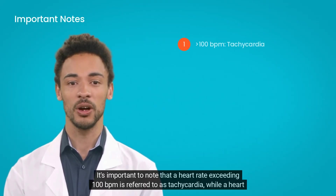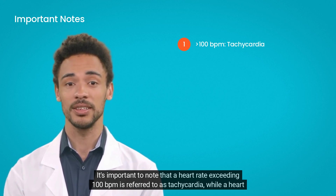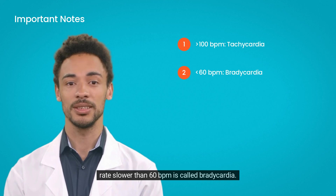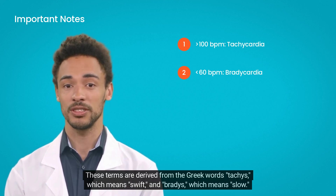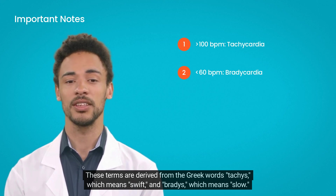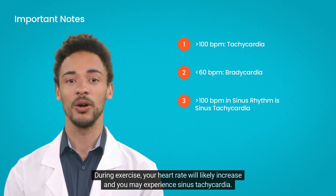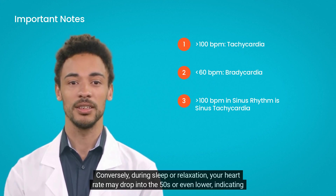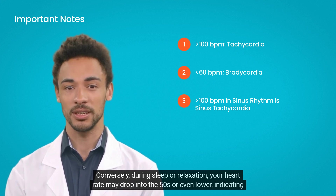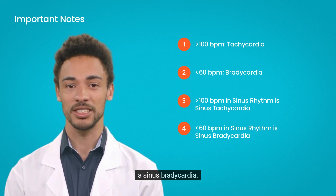It's important to note that a heart rate exceeding 100 BPM is referred to as tachycardia, while a heart rate slower than 60 BPM is called bradycardia. These terms are derived from the Greek words tachys, meaning swift, and bradyes, meaning slow. During exercise, your heart rate will likely increase and you may experience sinus tachycardia. Conversely, during sleep or relaxation, your heart rate may drop into the 50s or even lower, indicating a sinus bradycardia.